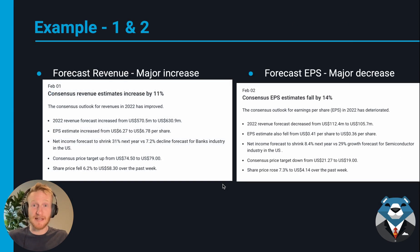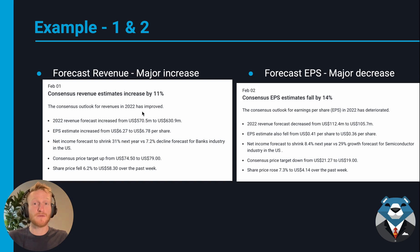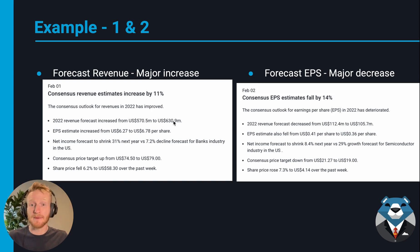Let's look at some examples. This first example is a forecasted revenue change — a major increase of greater than 10%. The second example is a forecasted EPS change — a major decrease of greater than 10%. Looking at the first example, we can see the consensus revenue estimate increased by 11%. The consensus outlook for revenues in 2022 has improved, with the 2022 revenue forecast increasing from $570 million to $630 million.